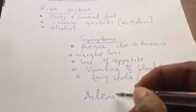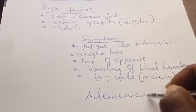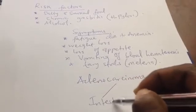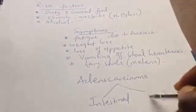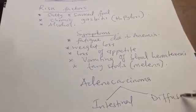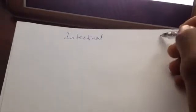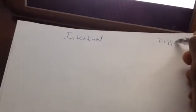Adenocarcinoma is divided into two types: the intestinal type and the diffuse type. To simplify the differences, let us compare them in tabular form — on one side we have the intestinal type, and on the other side we have the diffuse type.